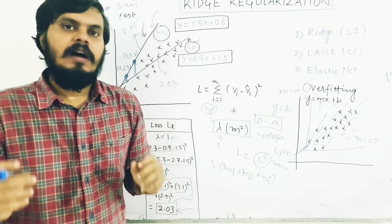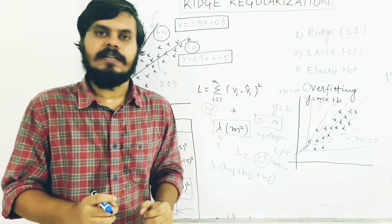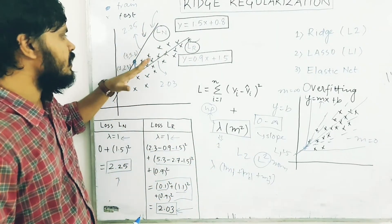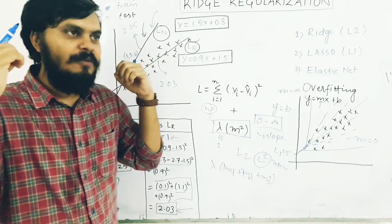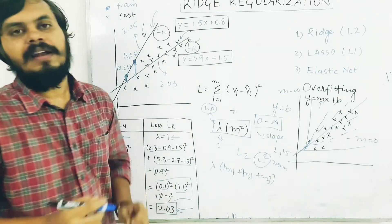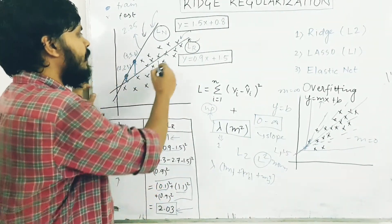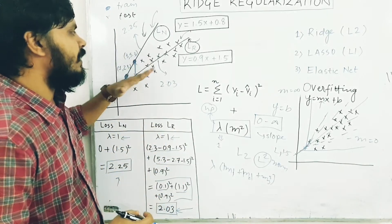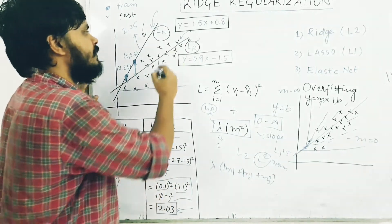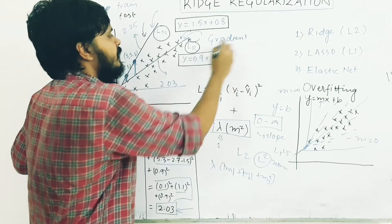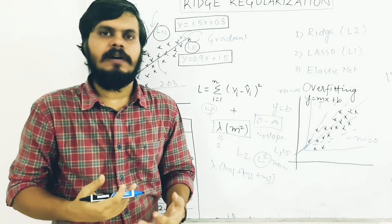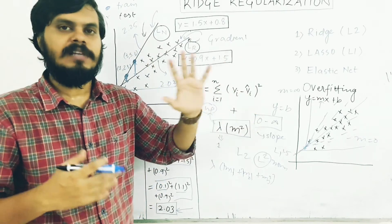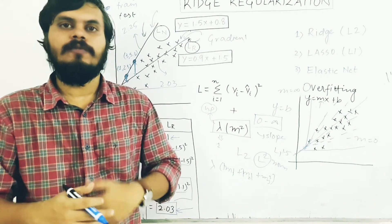So to summarize the whole idea behind regularization: we add a regularization term to the loss function so that the slope of the line reduces slightly, causing the model to select a line with lower variance. Because of this, bias grows slightly but variance reduces significantly, reducing overfitting. Now let's dive into the coding part and see how it works in scikit-learn.